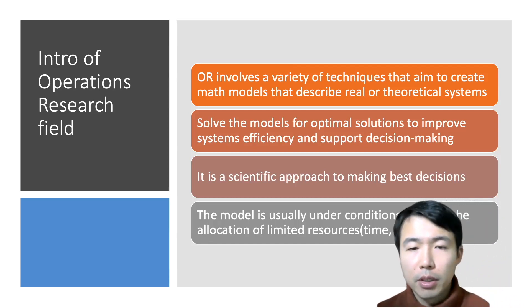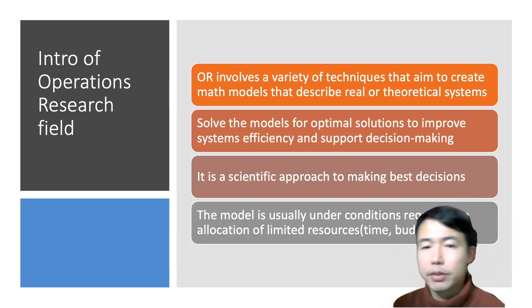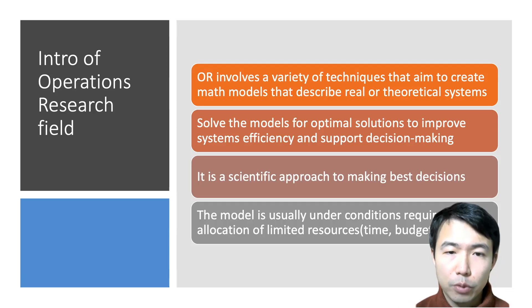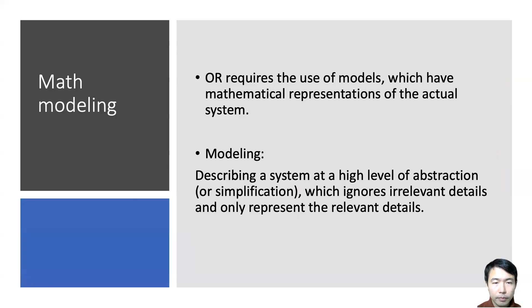The model is usually under conditions that require the allocation of resources, for example, time and budget. OR requires the use of models which have mathematical representations of the actual system. Math modeling describes a system at a high level of abstraction or simplification, which ignores the irrelevant details and only represents the relevant details of a certain system.